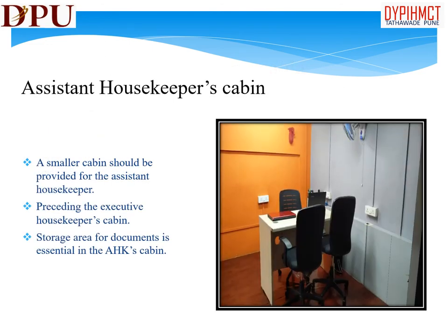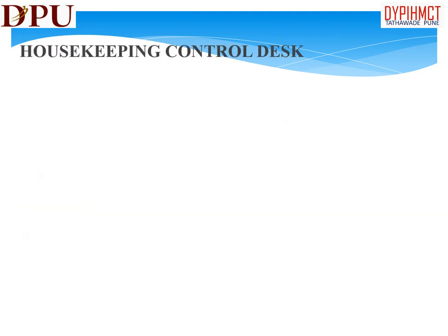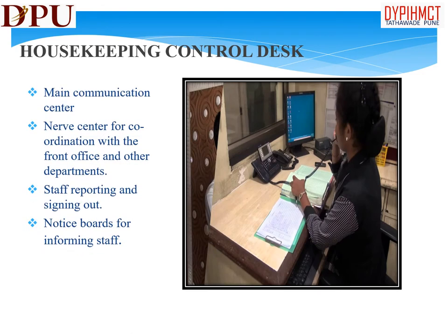Assistant housekeeper's cabin: a smaller cabin should be provided for the assistant housekeeper, preceding the executive housekeeper's cabin. Storage area for documents is essential in the assistant housekeeper's cabin. Desk control room: this is the communication hub of the housekeeping department and this desk is manned 24 hours a day. It should normally adjoin the executive housekeeper's cabin, as this is the point where all staff report for duty and sign out at the end of their shift. It should have a large notice board to pin up information for staff, more than one telephone connection, and shelves for storage of files and registers.